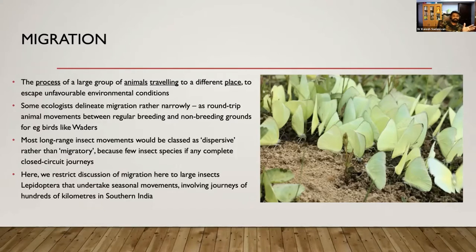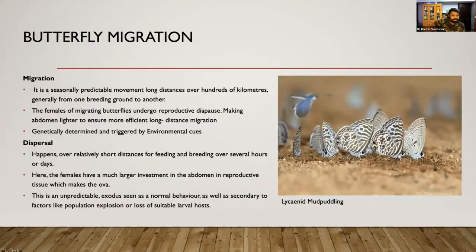In butterfly migration, there is another term called dispersal, and we should understand the basic difference. In migration, we refer to a reasonably predictable movement of large numbers of butterflies over long distances, generally from one breeding ground to another. The females are in reproductive diapause, making the abdomen lighter so they can travel faster and more efficiently. This is genetically determined and triggered by environmental cues.